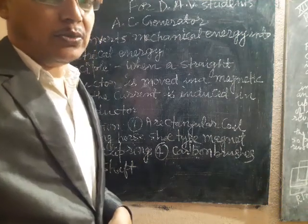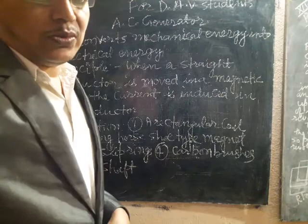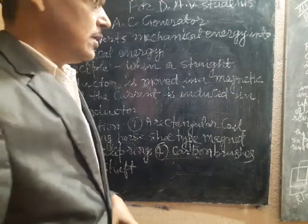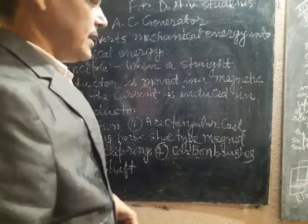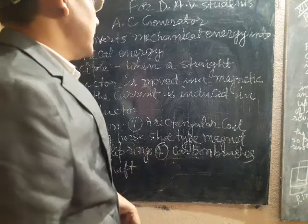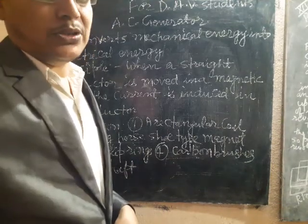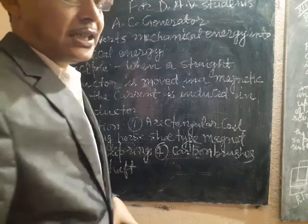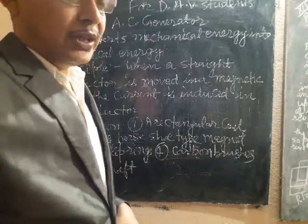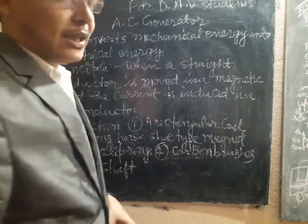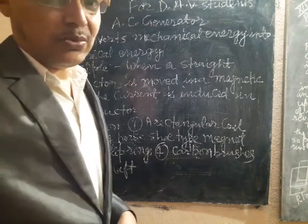There are four things: Fleming's left hand rule and Fleming's right hand rule. In case of a motor, Fleming's left hand rule is used, while in case of a generator, Fleming's right hand rule is used.